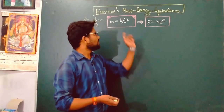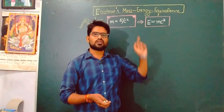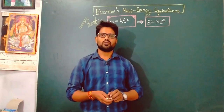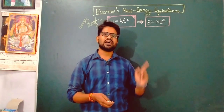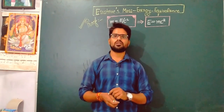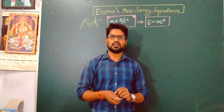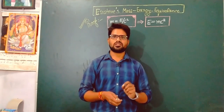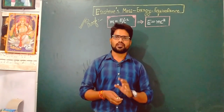The relation is M equals E over C square, where M is the moving mass, E is the energy stored, and C is the velocity of light in vacuum.